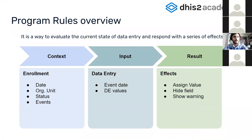For context, an enrollment has its own enrollment date and organization unit. The enrollment has a status that can be active or completed, and it has a series of events with values. The user in data entry can be in an event or the enrollment form. Based on these sets of data, program rules can be evaluated and respond with effects — assigning a value, hiding a field, showing a warning, and many more, all documented in the DHIS2 documentation.